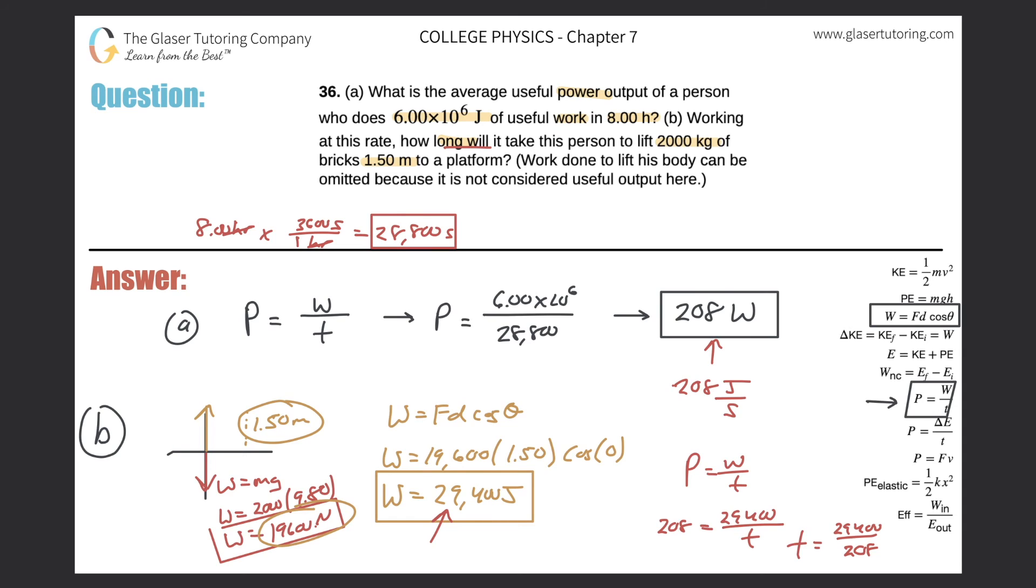So let's do that. 29,400 divided by 208 comes out to be about 141. So the time now would be, I'm just going to write it right above here. My work is a little circular here. I apologize. 141 seconds. So that would be then the amount of time it would take to lift that amount of mass, assuming that their power outputs are what we're given.